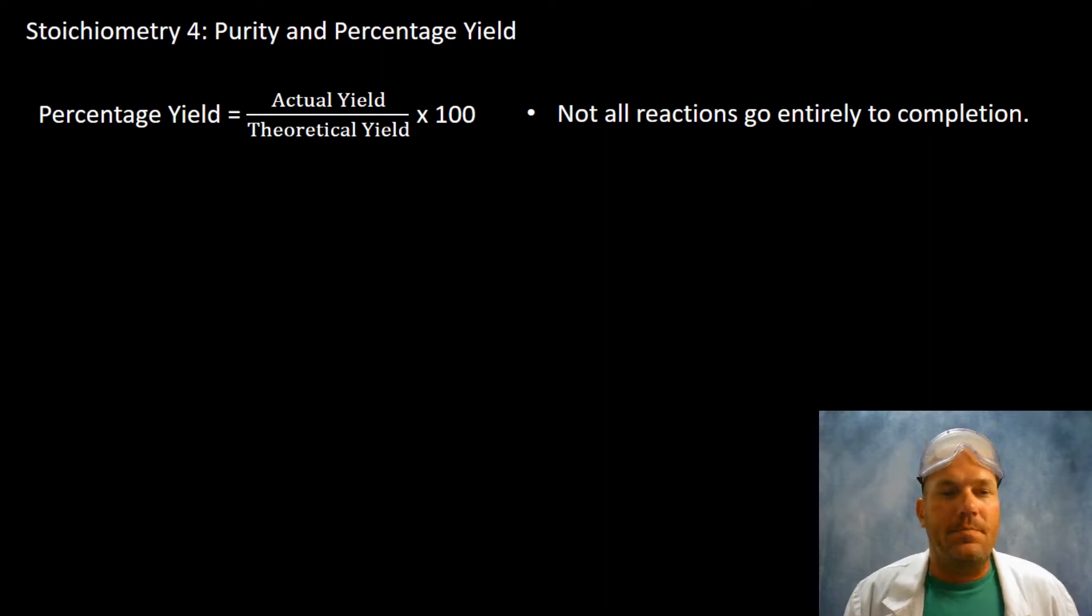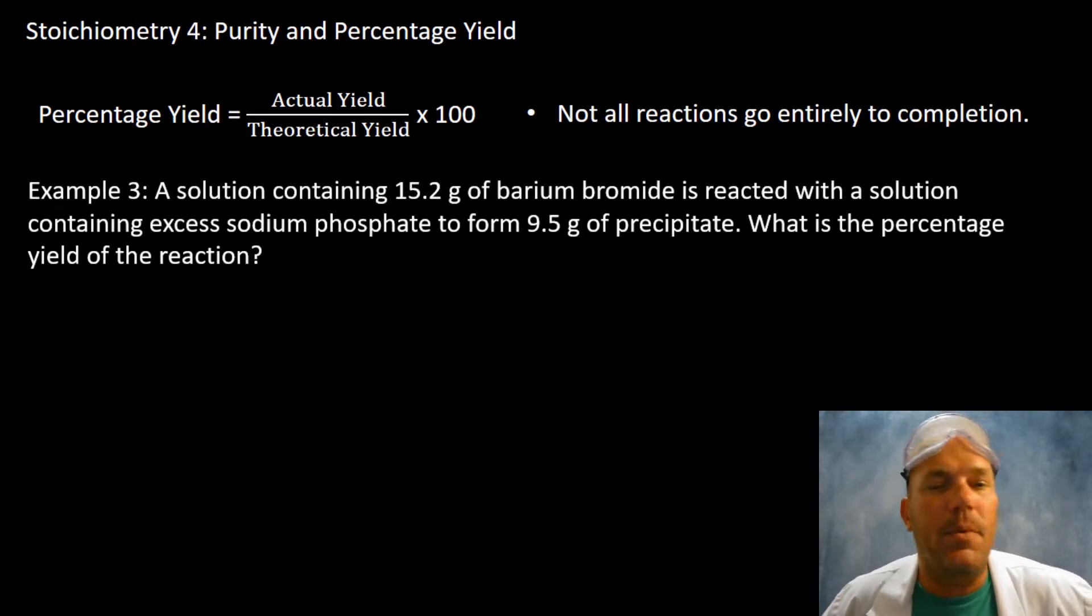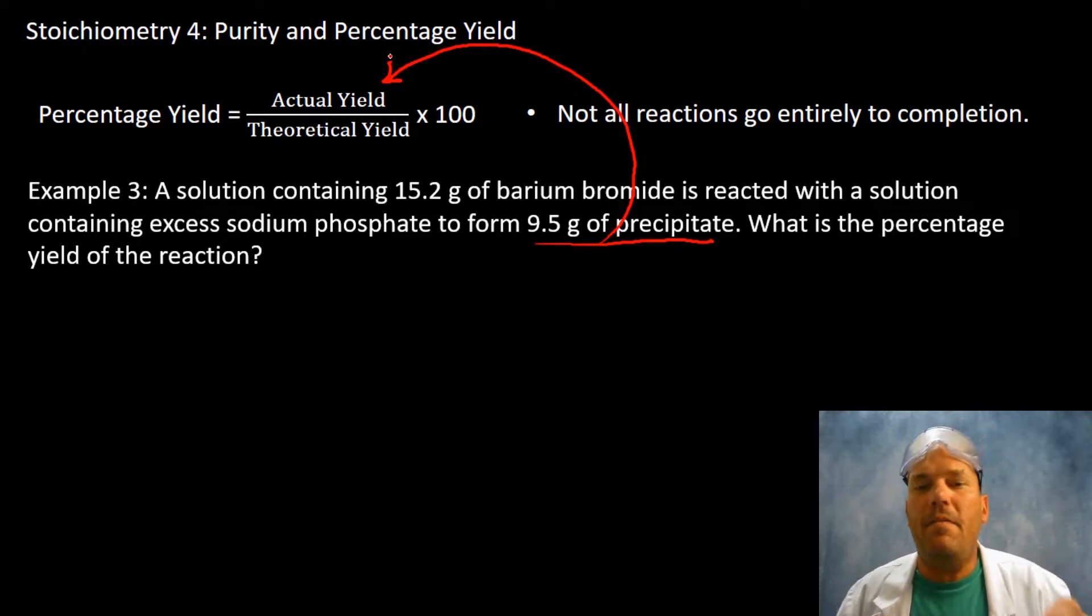Let's take a look here at our Example 3. So we have a solution containing 15.2 grams of barium bromide and it's reacted with a solution containing an excess. That's great news, we're being told which is the excess reagent, so we know that barium bromide is the limiting reagent. And it's forming 9.5 grams of a precipitate. What is the percentage yield in this process? So here's the deal: you are being given the actual yield, it's 9.5.